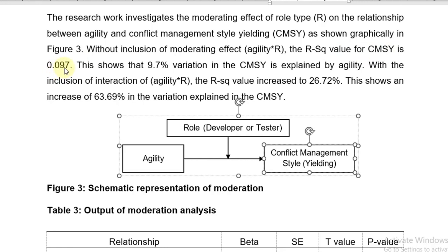That is 9.7%. This shows that 9.7% variation in the CMSY is explained by the agility only. With the inclusion of the interaction term, the R-square value is increased to 26.72%. This shows an increase of 63.69% variation in the CMSY.